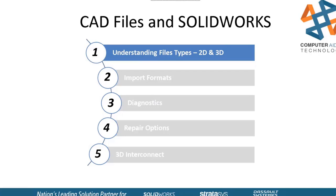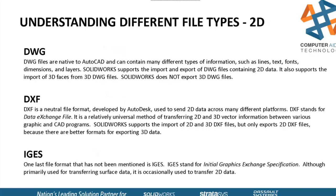Understanding the different file types — I'm not going to read all of these slides; these are great informational slides for you. Different 2D file types include DWG and DXF. They are the most common that we see in the 2D world, and you also see a lot of IGES files as well. When importing, DWG is a native CAD file to AutoCAD — it has lines, text, fonts, dimensions, et cetera. SolidWorks can import DWGs with 2D data only, and it can also support 3D faces of 3D DWG files.